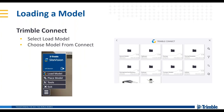When loading a model, once you've created or have a data set you want to use in the field, you'll load that model into Trimble Connect. You'll create a project folder, upload that data, and Trimble Connect will do some assimilating — which usually takes anywhere from a minute to 10 minutes depending on file size. Once the assimilation process is done, you'll get a notification, and you can start using that model in the field.